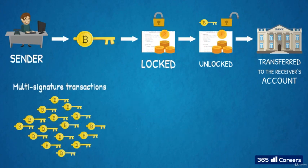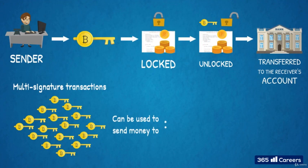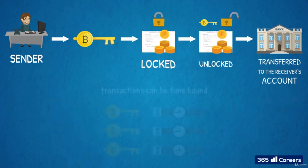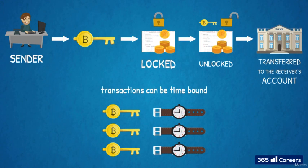In this way, it becomes possible to structure multi-signature transactions, requiring more than one private key to unlock the coins. This can be used to send money to multiple receivers in one transaction, or to send money to an entity with multiple stakeholders who have joint control over the funds. For instance, a company with several partners which receives Bitcoin may find multi-signature transactions a useful way to manage such transfers. Another useful feature for transaction structuring are time locks.